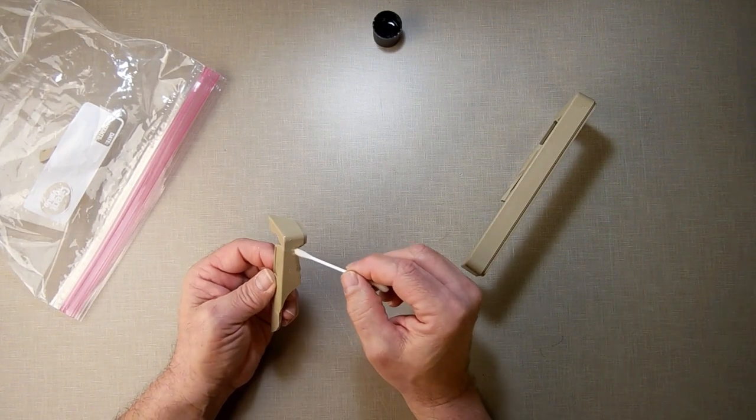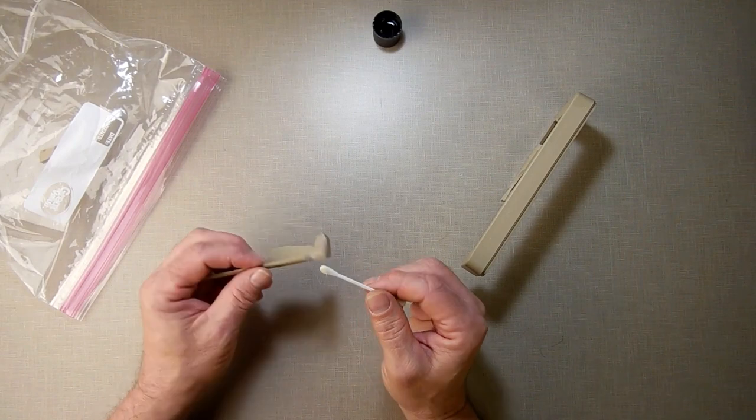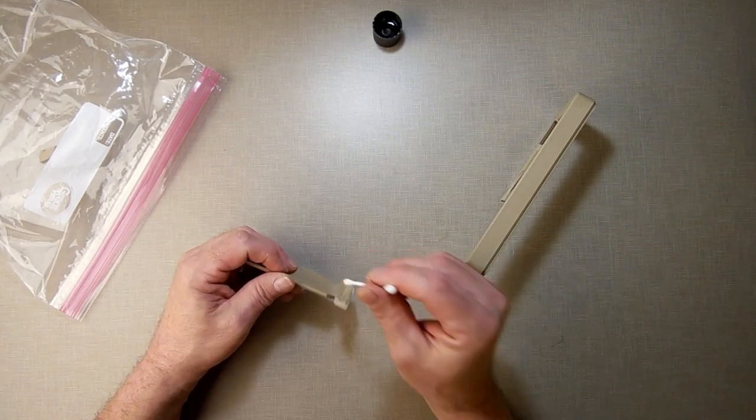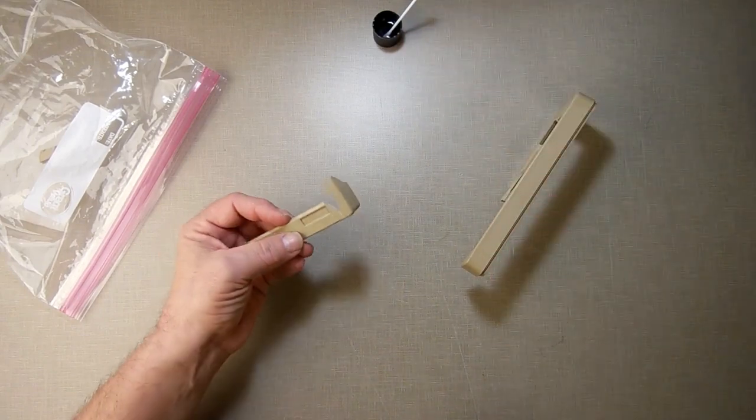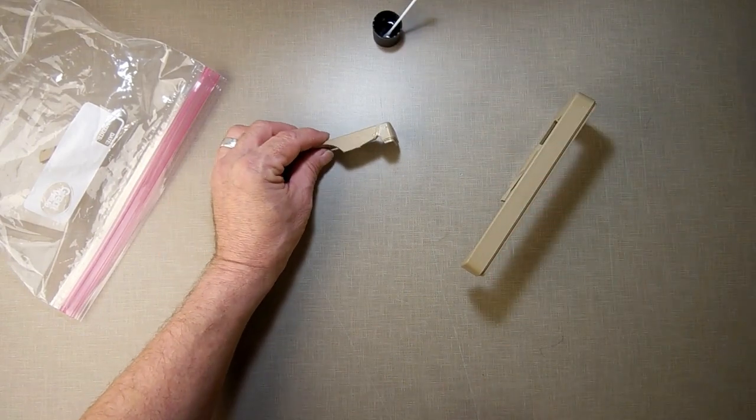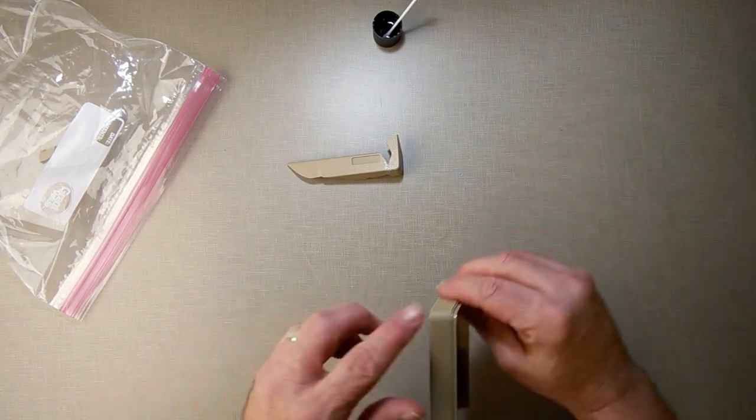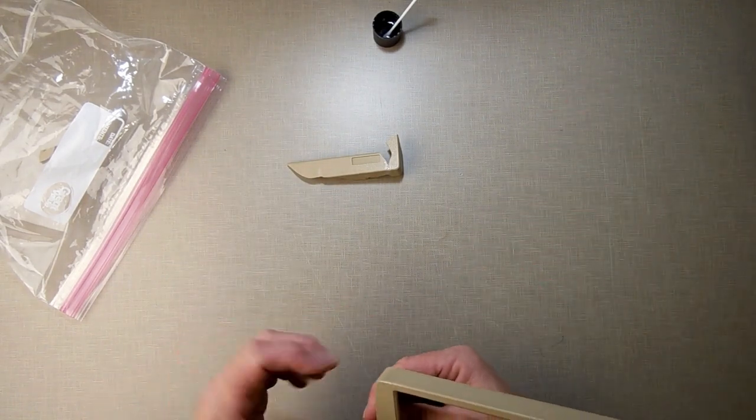And then I'm just taking this and I'm just smoothing the crack right there. And supposedly, what this does is it welds the plastic back together. And if that's the case, that's awesome. Much better than using super glue. It just might take a while to dry, it seems.